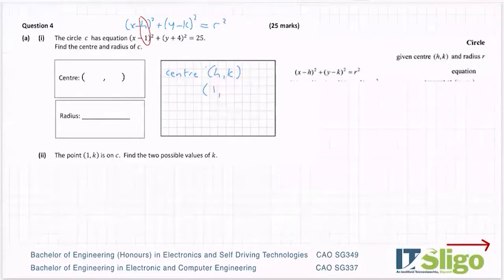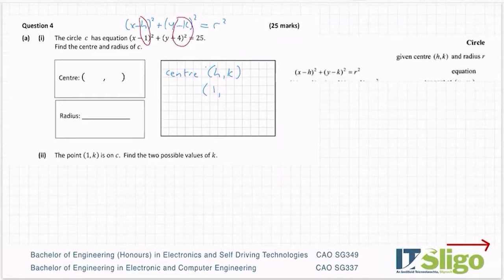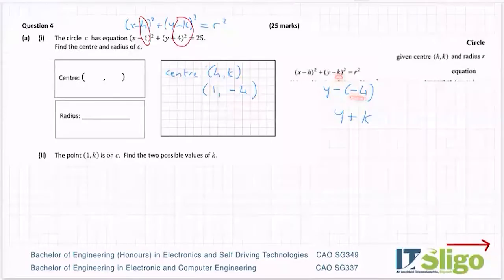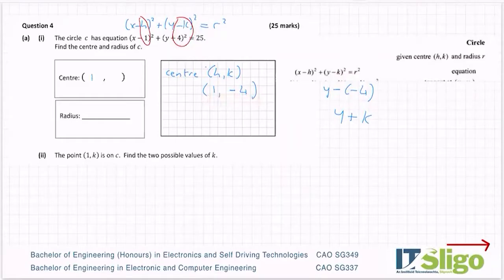Now looking at k: I have minus k at the top but plus 4 in the equation. So k is in fact minus 4, because the formula (y minus k) became (y minus minus 4), which gives (y plus 4) in the equation of the circle. The original center value was minus 4, so you end up changing the sign. The center is (1, minus 4).